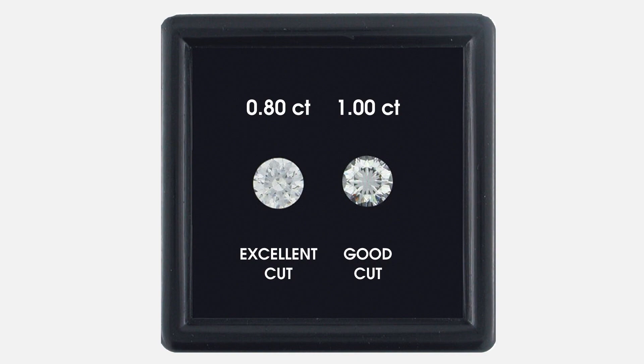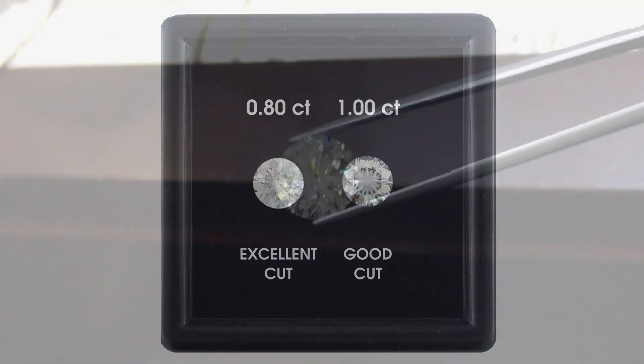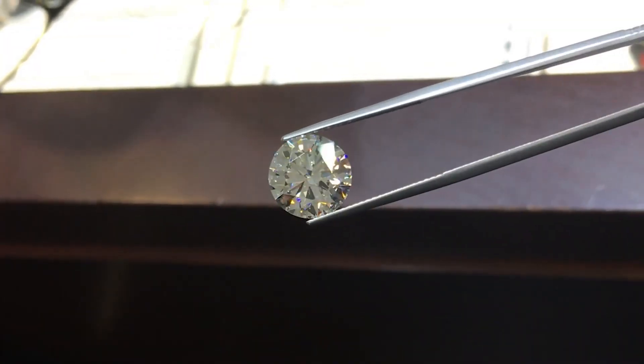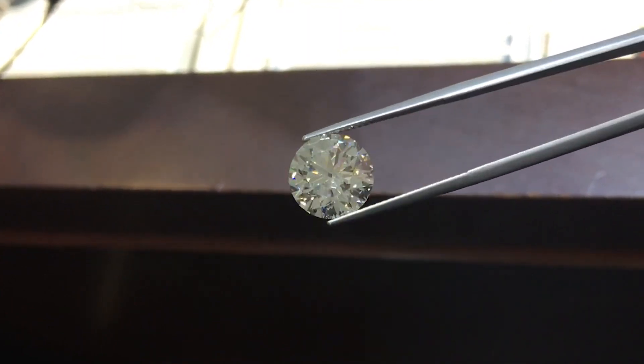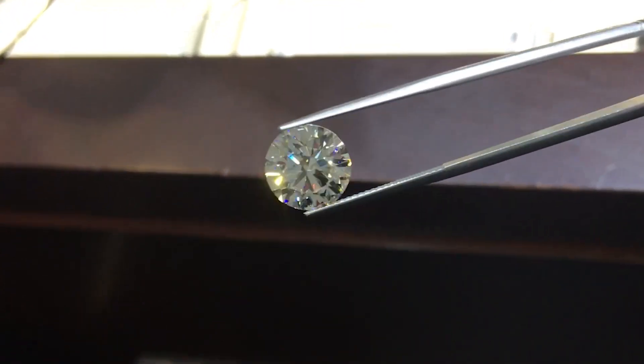More than any other C, the way a diamond is cut determines how big, bright, and lively it appears as it travels through the world's many different lighting conditions.